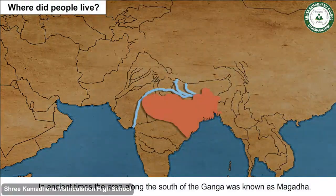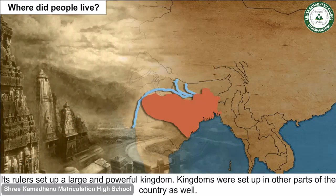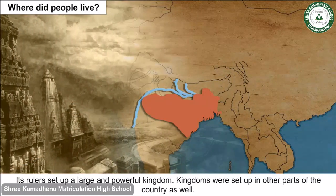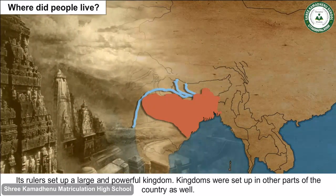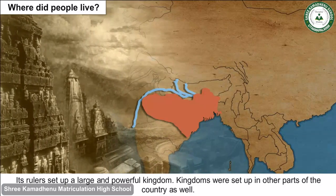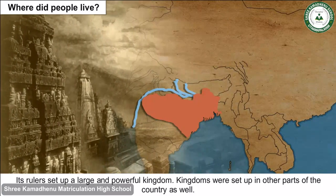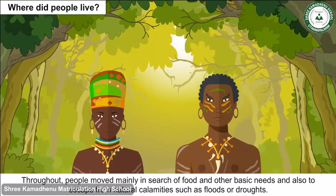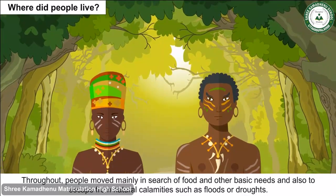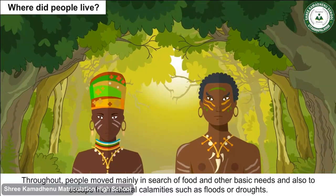In ancient times, the area along the south of the Ganga was known as Magadha, and its rulers set up a large and powerful kingdom. Kingdoms were set up in other parts of the country as well. Throughout, people moved mainly in search of food and other basic needs.